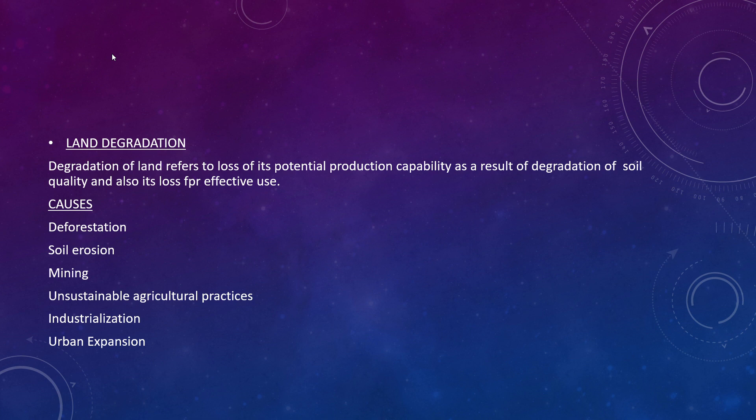Land degradation is the loss of its potential production capability as a result of degradation of soil and loss of fertility of the topsoil. The causes include: deforestation, soil erosion, mining, unsustainable agricultural practices, industrialization, and urban expansion.